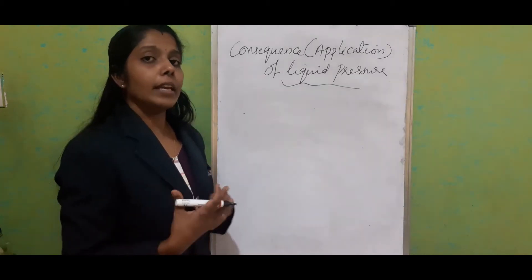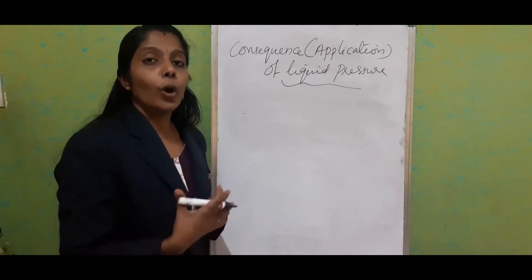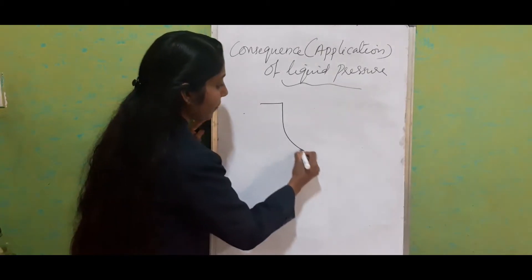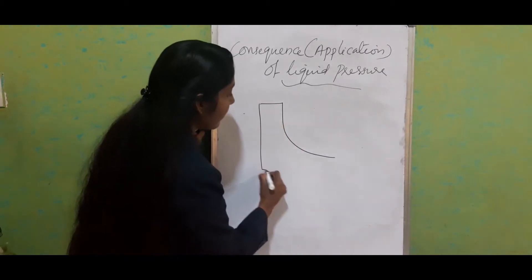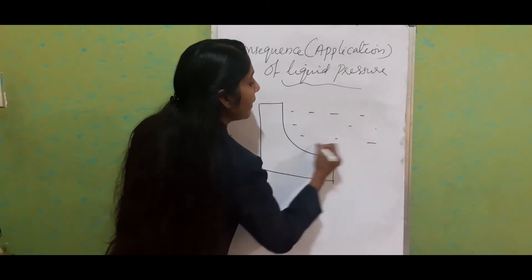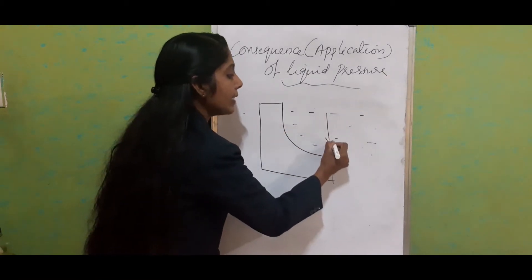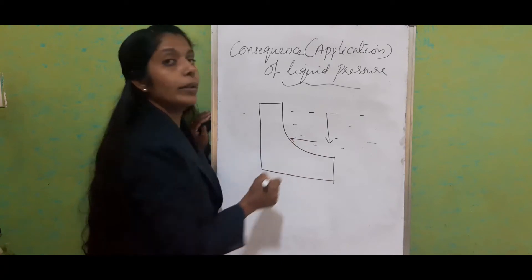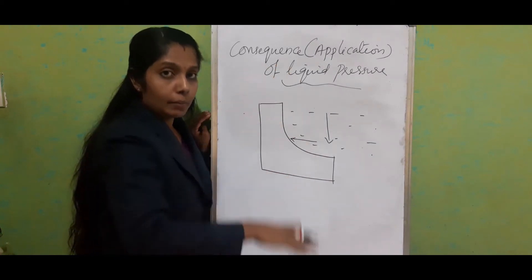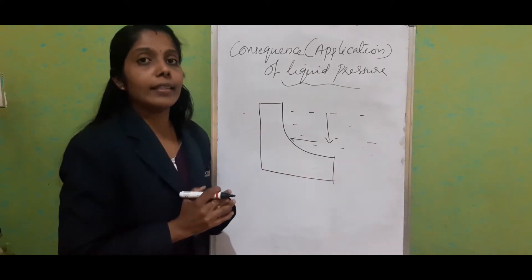We know the dam — why do we need a dam? To store water. The wall of the dam is always made thicker at the bottom part. The reason is that this side is filled with water, and as the depth increases, the pressure exerted on the wall will be more. So to withstand the liquid pressure at the bottom part, it is made broader and thicker.